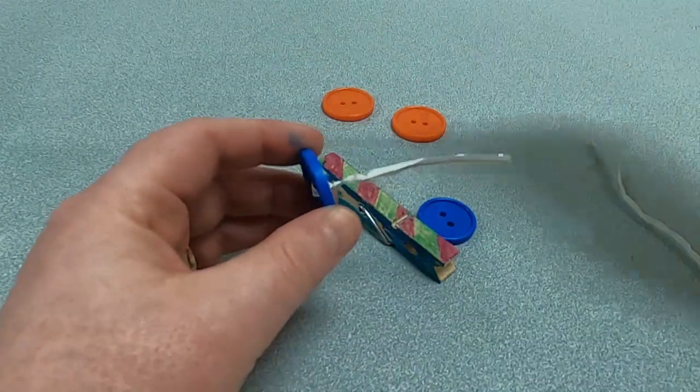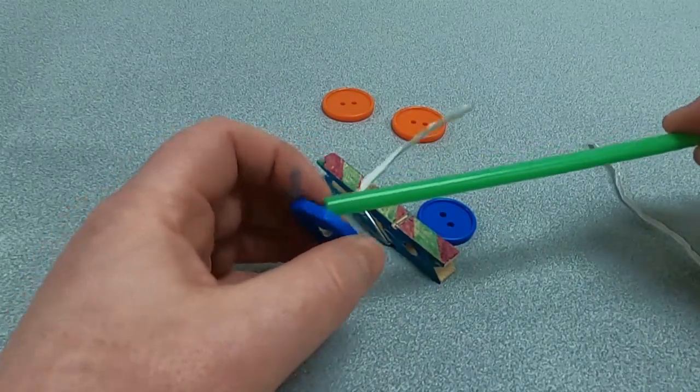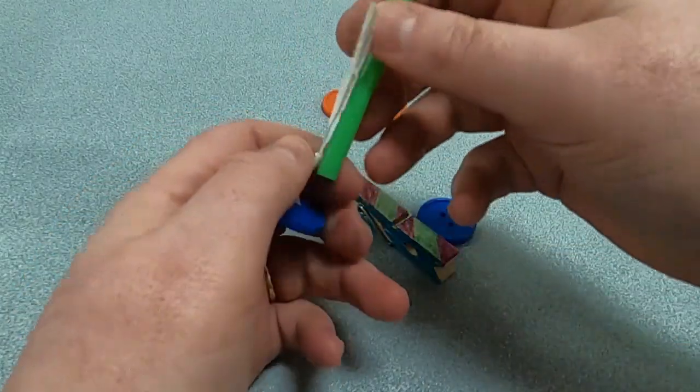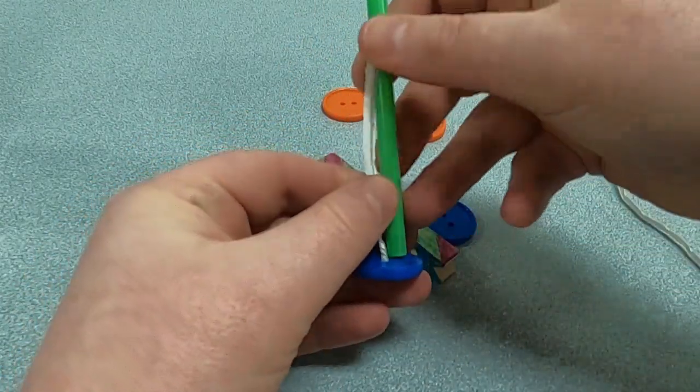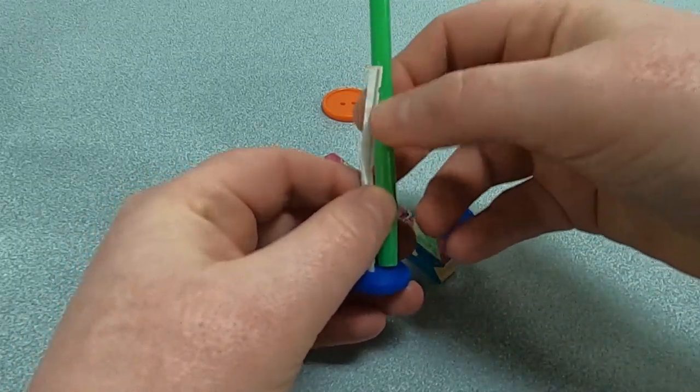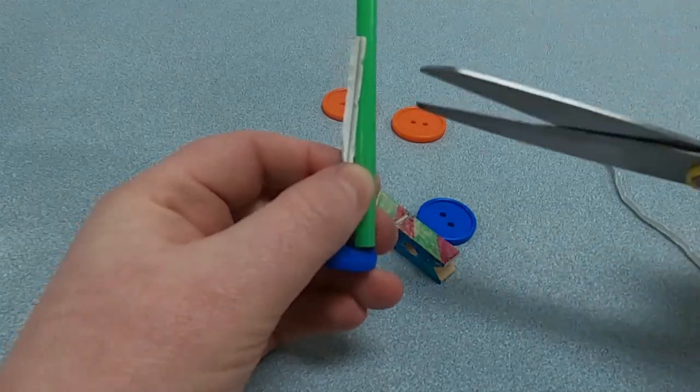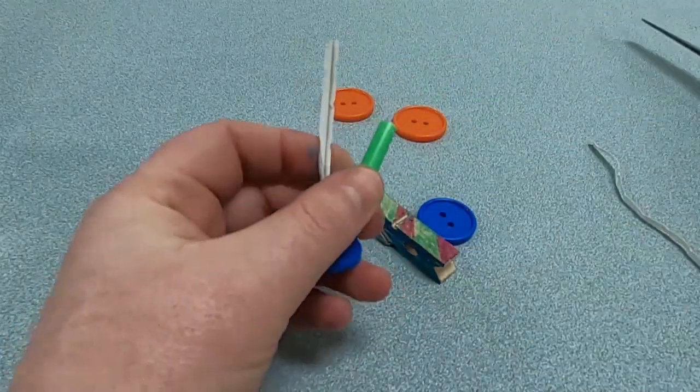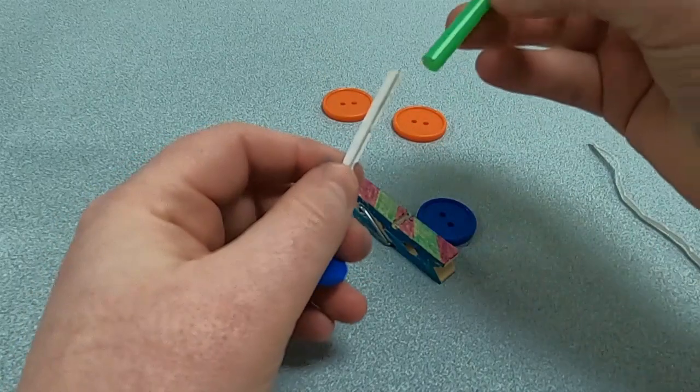Next we're going to cut our straw piece. You want to leave some room, so don't cut it as long as the twist tie, maybe leave about an inch or so. Let me cut my piece. Okay, so we got the straw piece.